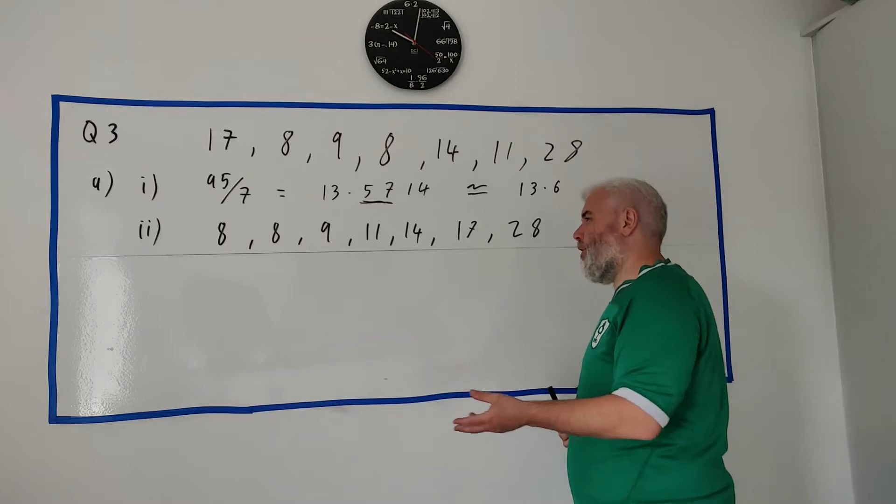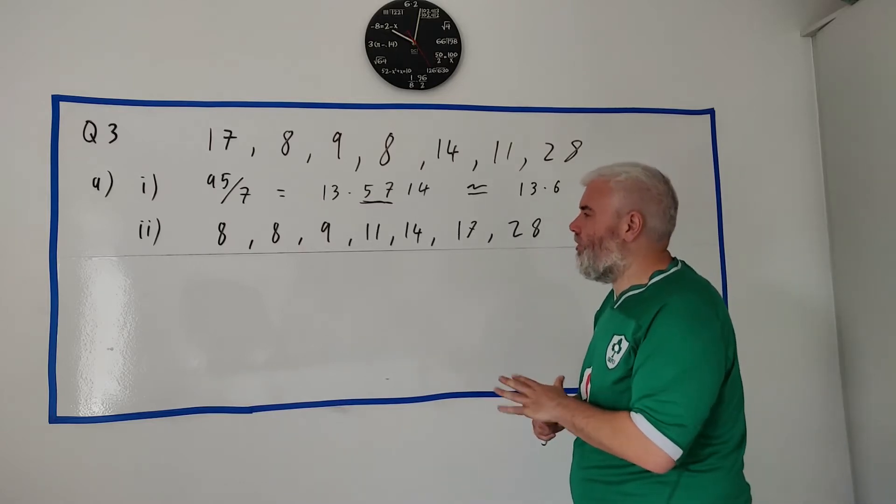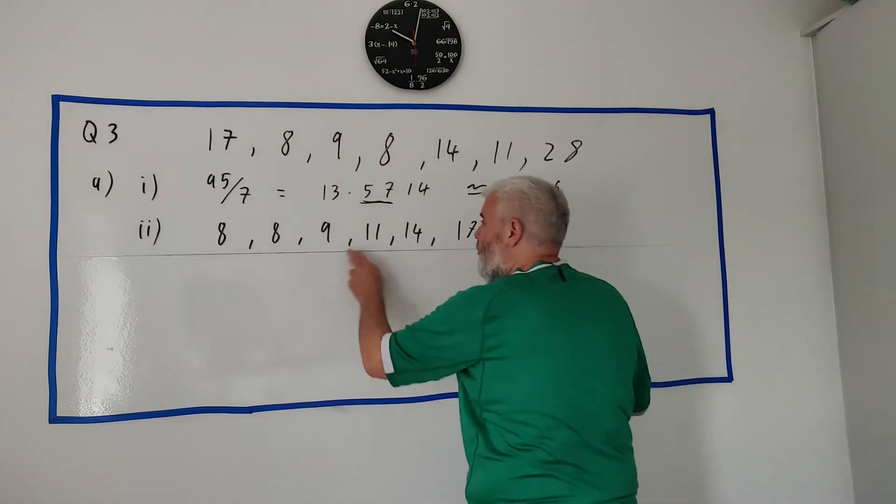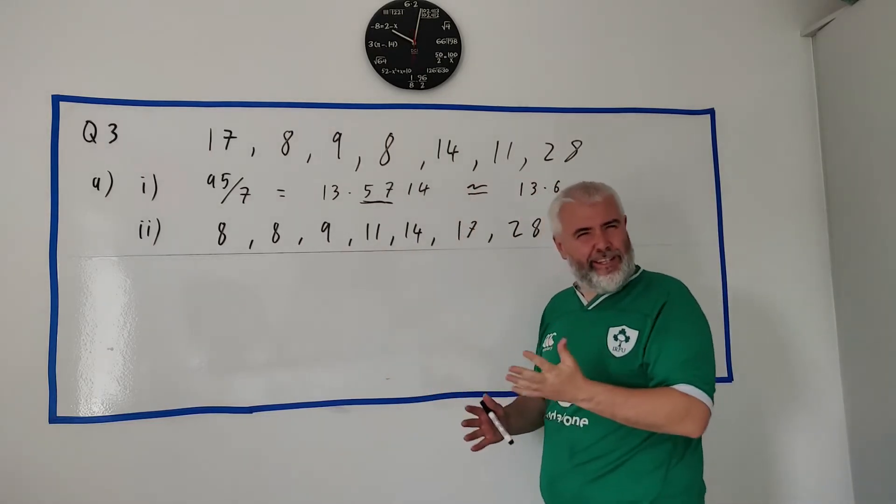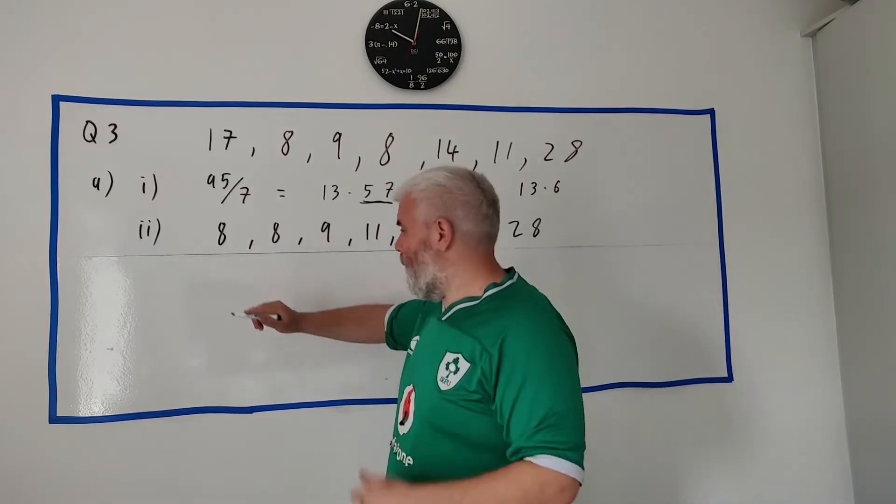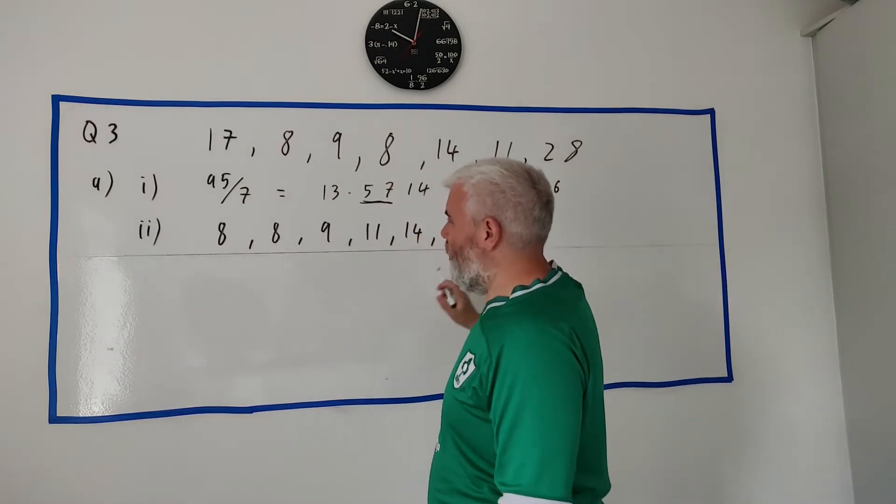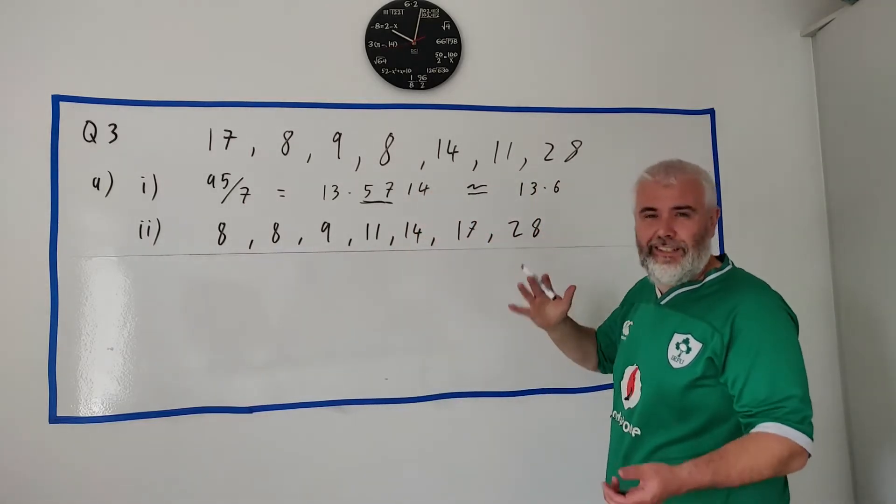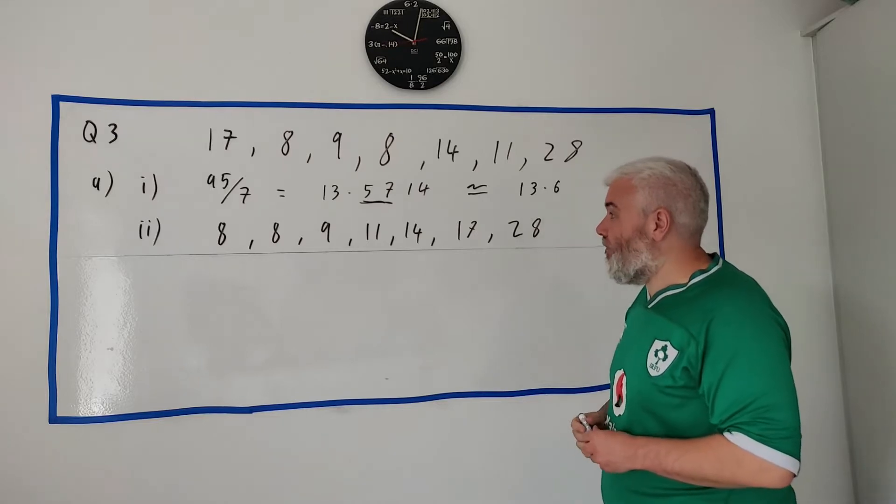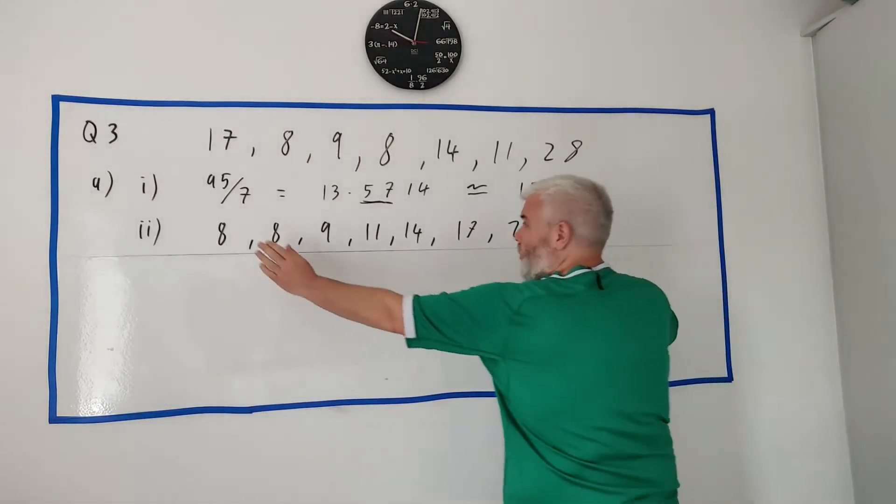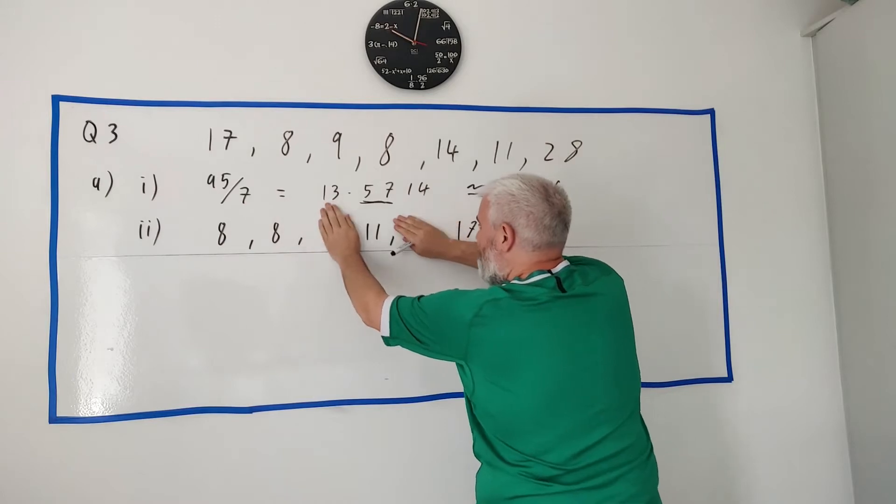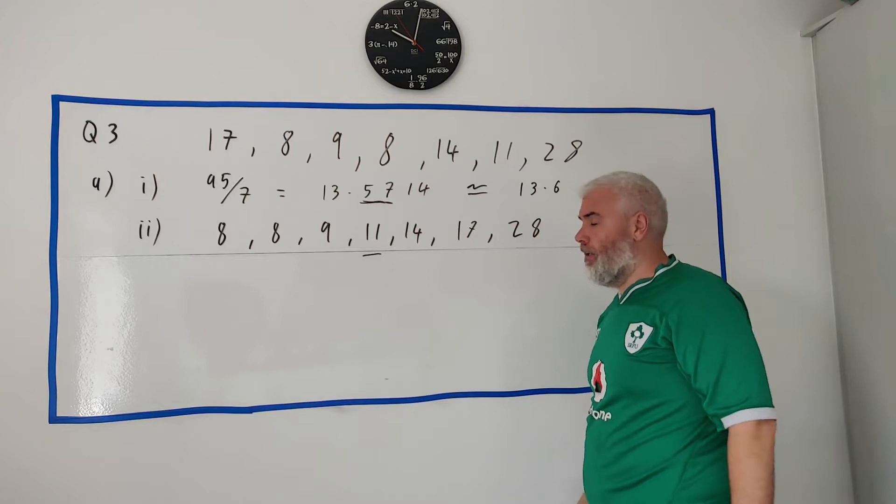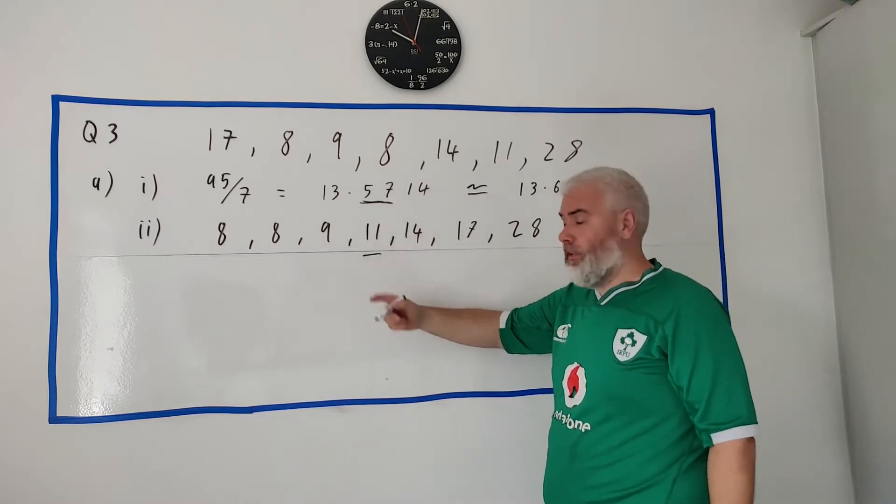We have to add a half to that, or another way to think of it is we have seven here, add one, divide that by two, we get four - the fourth number. You could also just simply go first, last, second, last, until we're left with the middle number. Anyway, the median is simply the middle number when there's only one - the answer is 11.